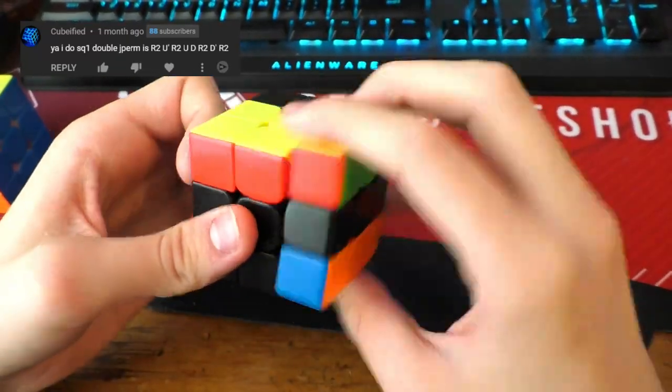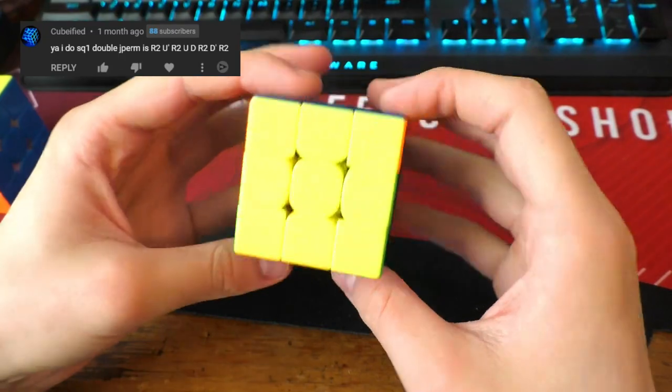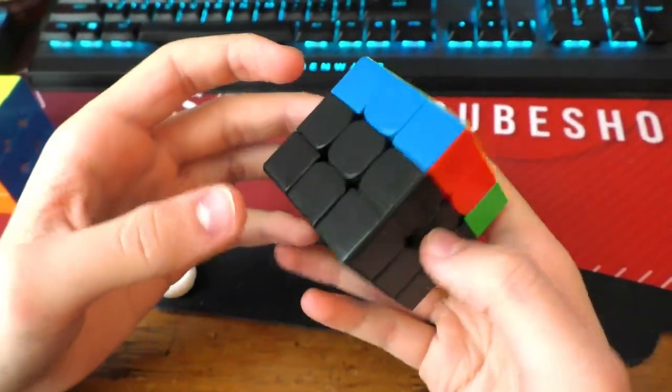Watch this. R2 U' R2 U D R2 D' R2. There we go. We get a J-perm in eight moves.